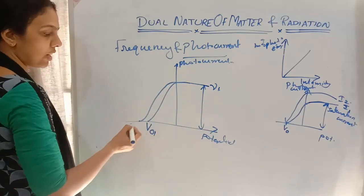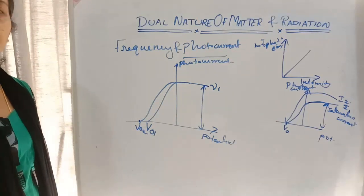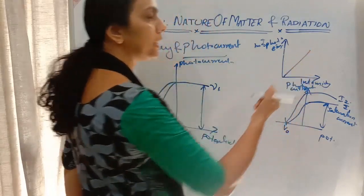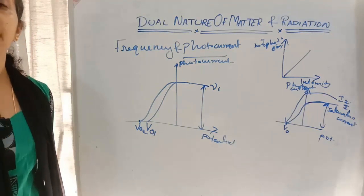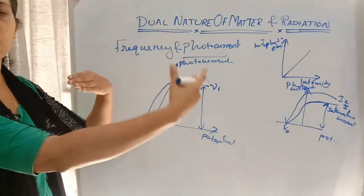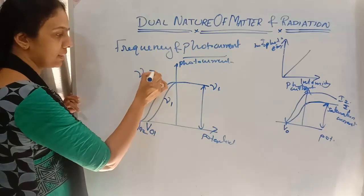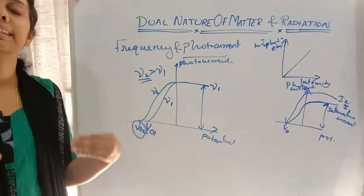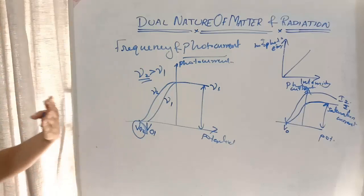Since the frequency is changing, we get a different stopping potential. As frequency changes, the stopping potential changes. As frequency increases, more negative charge is required, so the stopping potential V₀₂ is greater than V₀₁. For ν₂ greater than ν₁, the stopping potential also increases.